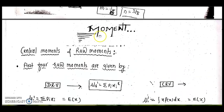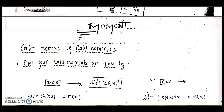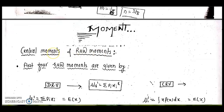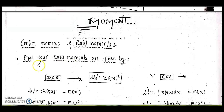Today's topic is moments and moment generating functions, under the random variable model. There are two types of moments: central moments and raw moments. Central moments are taken about the origin, and there are four raw moments in our syllabus.